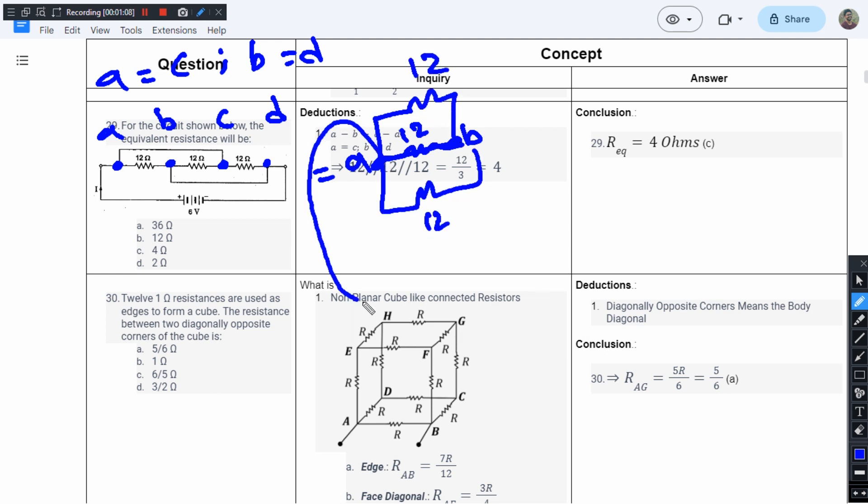Though from the given circuit it is not clear that all three resistances are actually parallel to each other, if we redraw the circuit we get them to be in parallel.